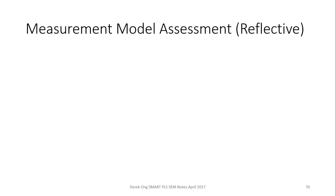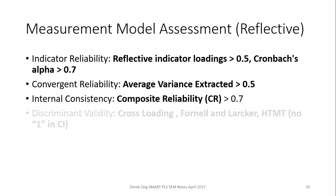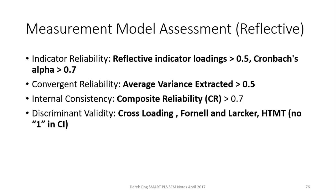Just a quick recap. The only difference between formative and reflective is how you report the results for the measurement model. For the reflective measurement model assessment, you need to look at indicator reliability — loadings and Cronbach's alpha above 0.5 and 0.7 respectively. Convergent validity using average variance extracted (AVE) above 0.5. Internal consistency using composite reliability (CR) above 0.7. And finally, discriminant validity using cross-loadings, Fornell-Larcker criterion, and HTMT with no zero in the confidence interval.